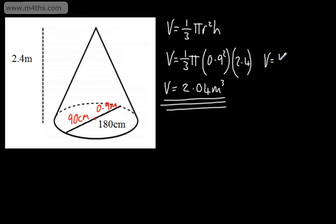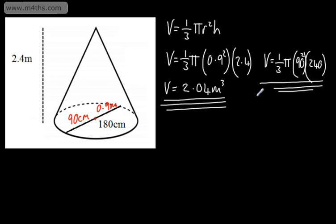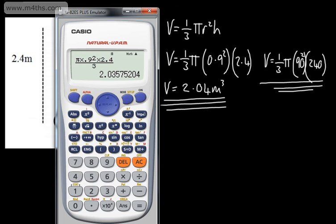If you'd done it in centimeters, you would have had one-third pi times 90 squared times 240. If you've done anything with scale factor enlargements for volume, our answer here would end up being 100 cubed times bigger — so working in centimeters with 90 and 240 gives a much larger number, which is consistent since the scale factor for length is 100. Either way, it's perfectly fine — you can simply put the values into the calculator.